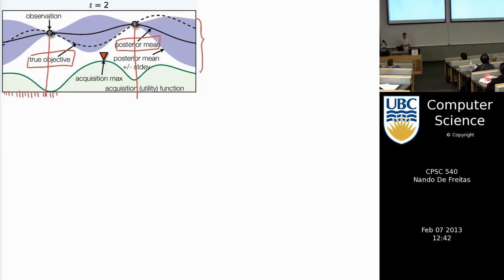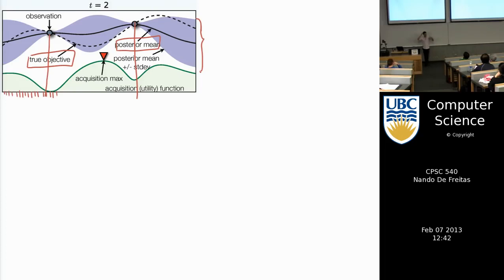Now we have a model of the function. We don't know the true function, but we're approximating it — the solid line is what's in your head, and the dashed line is the real world. Your objective is to find the place where the peak of the function happens; you want to pull the arm that gives you the maximum reward.